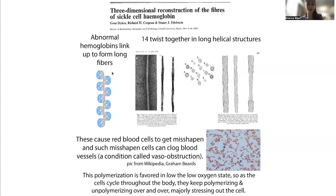What they're going to do is cause the red blood cells to get misshapen, and these misshapen blood cells can then clog blood vessels. This is a condition called vascular obstruction, and it leads to these painful sickle cell crises in which blood can't get to various appendages and organs.